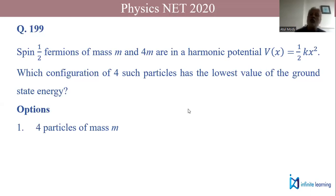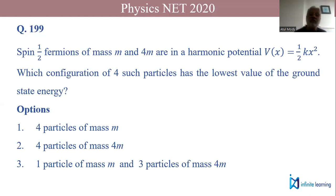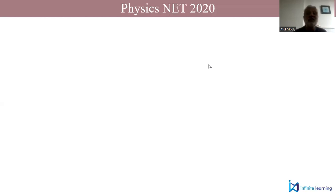The options are: all four particles of mass m in the ground state, all four particles of mass 4m in the ground state, one particle of mass m and three particles of mass 4m in the ground state, or two particles of mass m and two particles of mass 4m in the ground state.